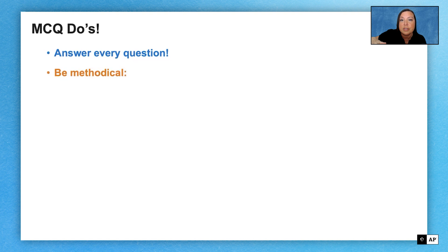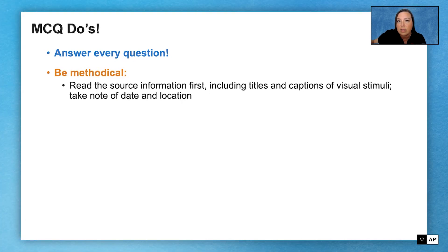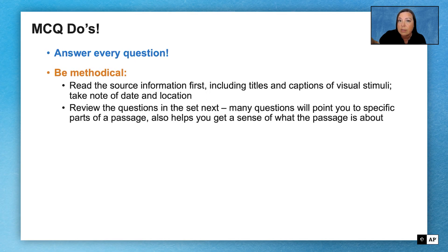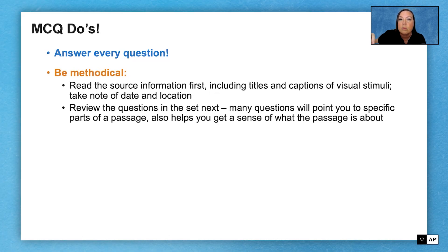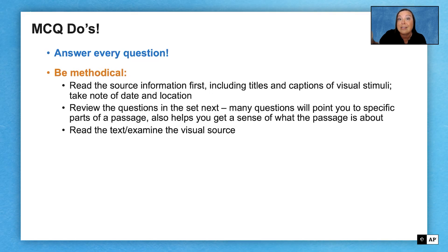Next, we want to be super methodical. This is the process I use with my students. Step one: read the source information first. It's going to help situate you in time and space and give you a sense of what the passage might be about. Next, read the questions. A lot of times the questions will point to a specific part of the passage, so it's good to know that ahead of time so when you read the passage, you can focus on that particular area. Then you'll actually start to read the passage, and if you've previewed the questions first, it will help with your reading comprehension.